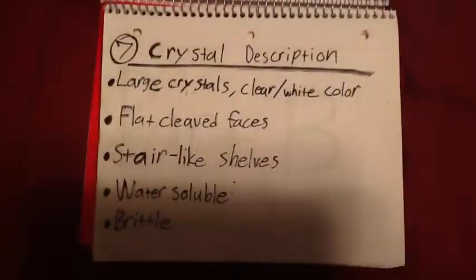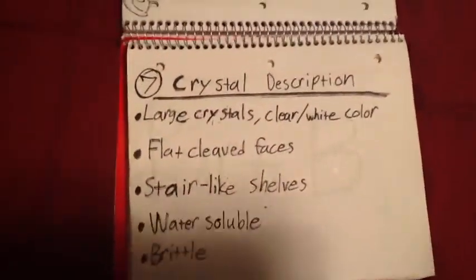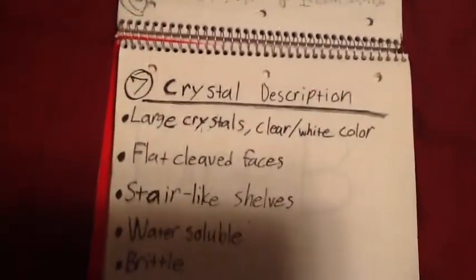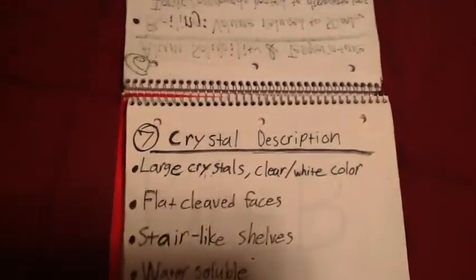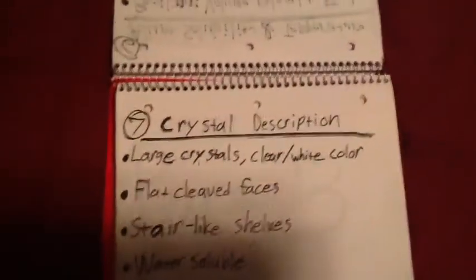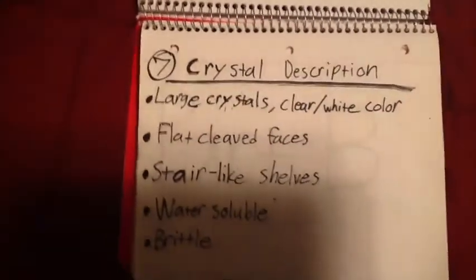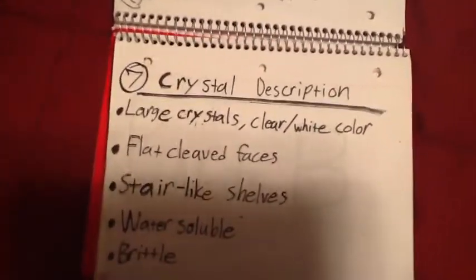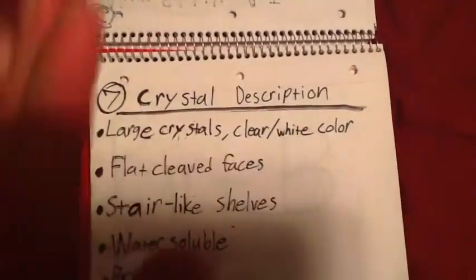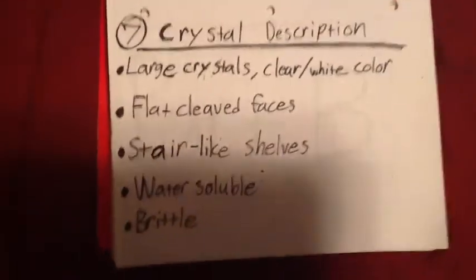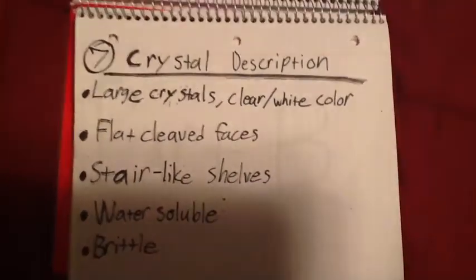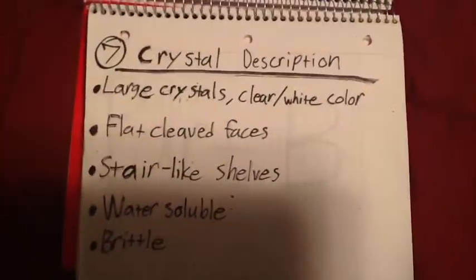Now we move on to number seven, the crystal description. These crystals when they formed are somewhat large crystals. There's a few of them scattered around, but they're mostly clear or white in color. For the most part they had flat cleaved faces and you could probably see that a little bit in the video. They had stair-like shelves, they kind of bumped over everything, but they're also water-soluble and they're brittle as we crushed them up, just like a lot of ionic compounds are.